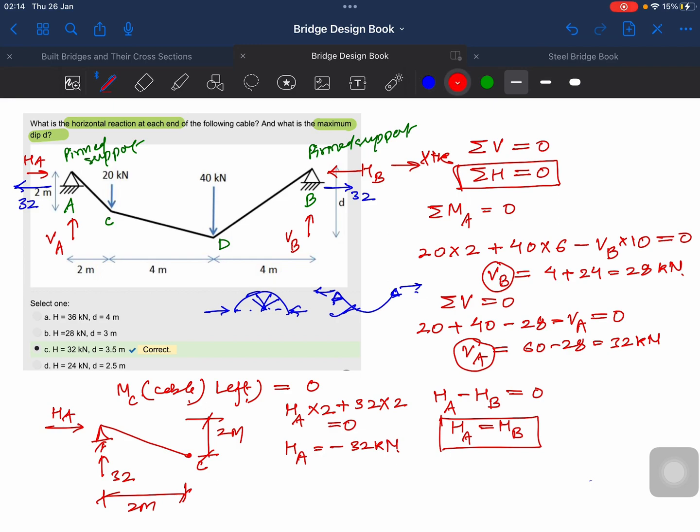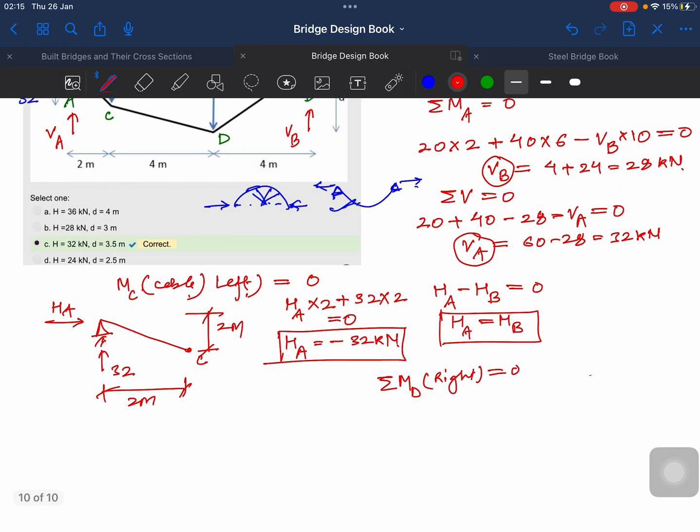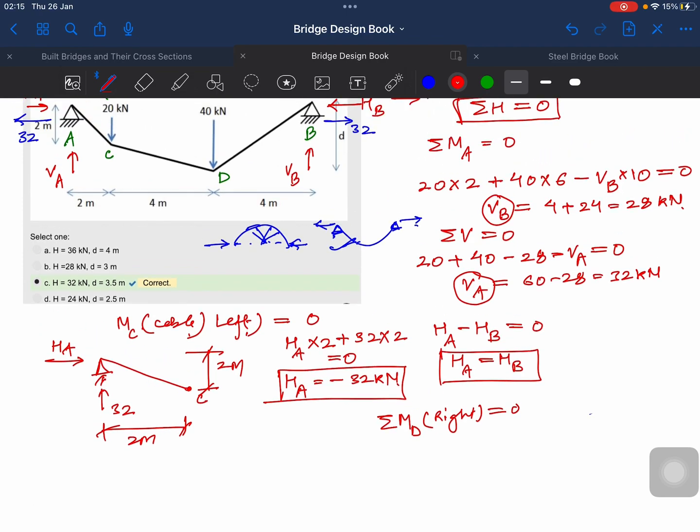Now coming back to the problem, we got HA. Now taking moment about D but on the right side. So VB into 4, this is anti-clockwise, let's say negative, and this is clockwise, 32 into d. So VB is 28 into 4 equals 32 into d. d comes out to be 3.5 meters. Let's see if we have that answer - yes, this is the one which is correct.